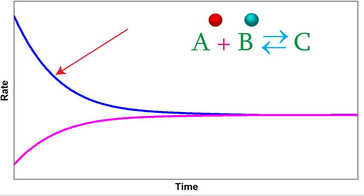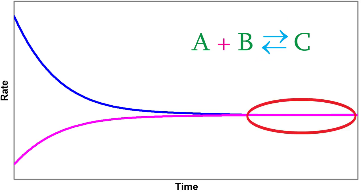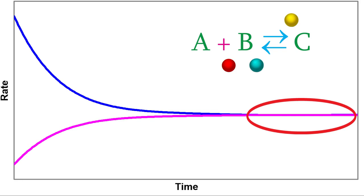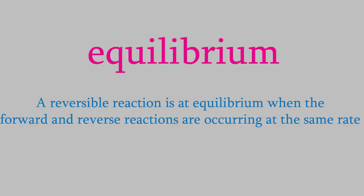As we saw a moment ago, the forward reaction gets slower and slower, and the reverse reaction starts at zero and gets faster. Eventually the two rates will become equal. That means that as many molecules of C get formed in the forward reaction as get consumed by the reverse reaction. The same is true for A and B — just as much gets produced by the reverse reaction as gets used in the forward reaction. When a reversible reaction reaches this point, we say that it's at equilibrium. So a reaction is at equilibrium when the forward and reverse reactions have the same rate.